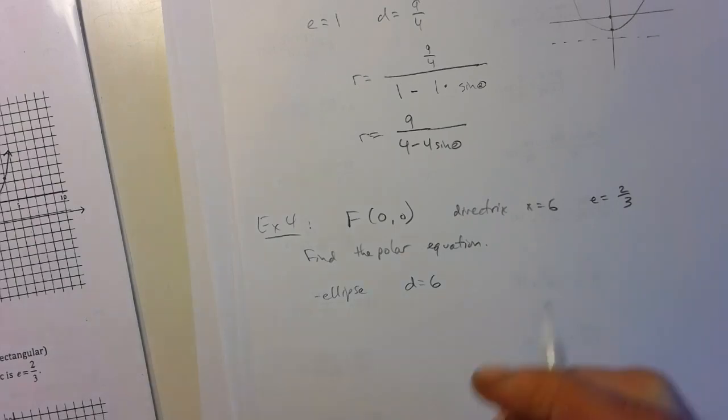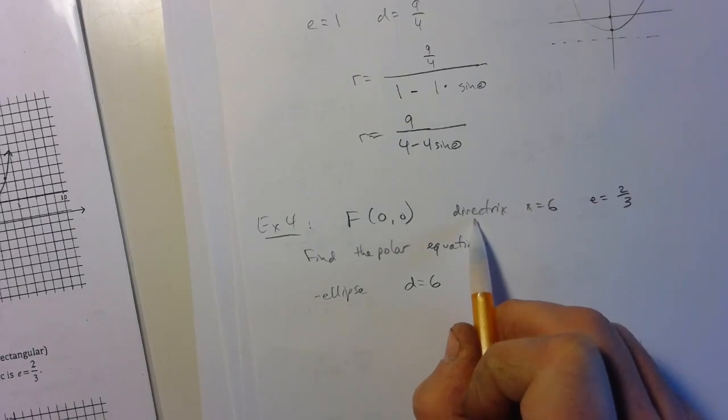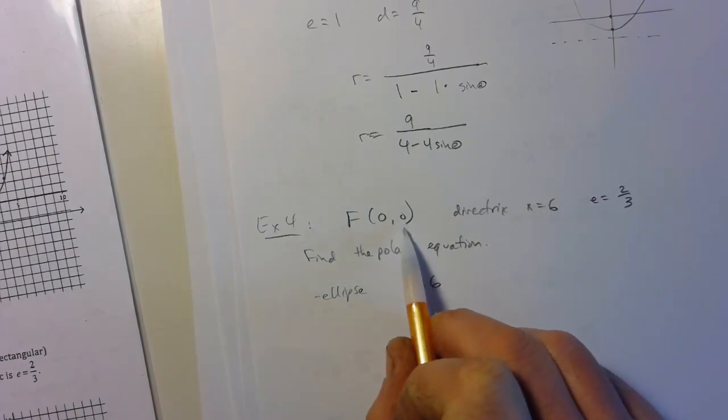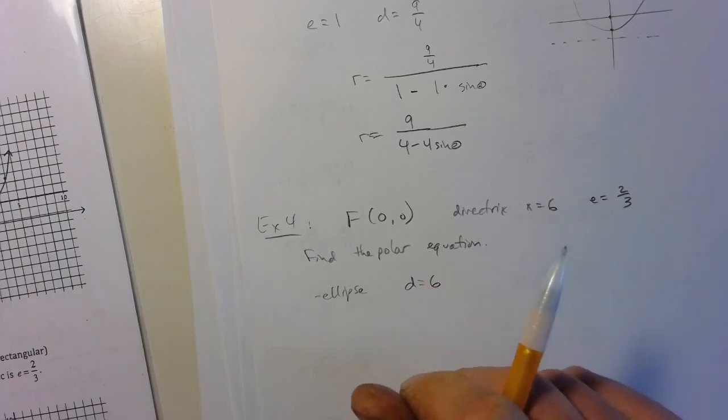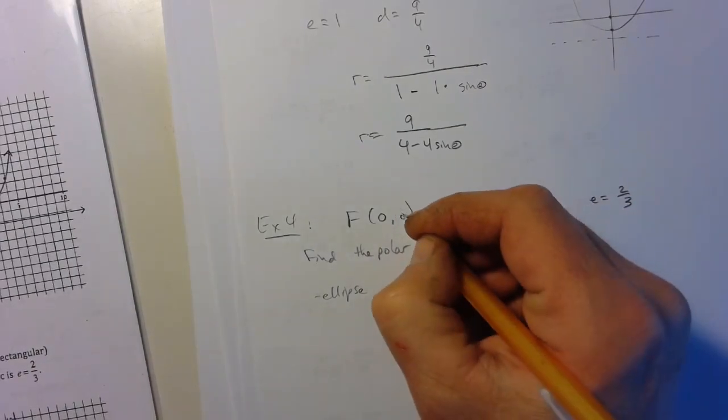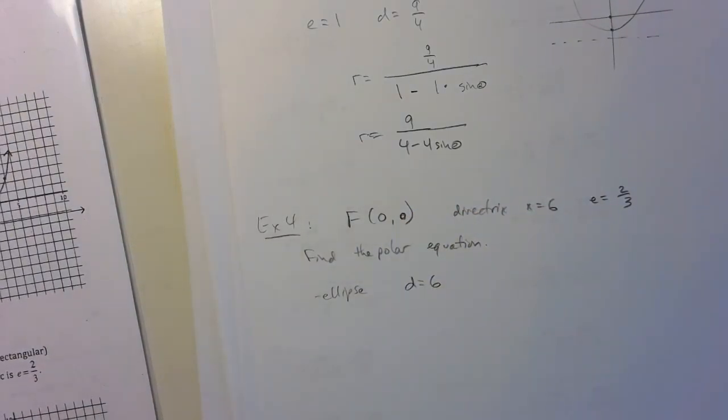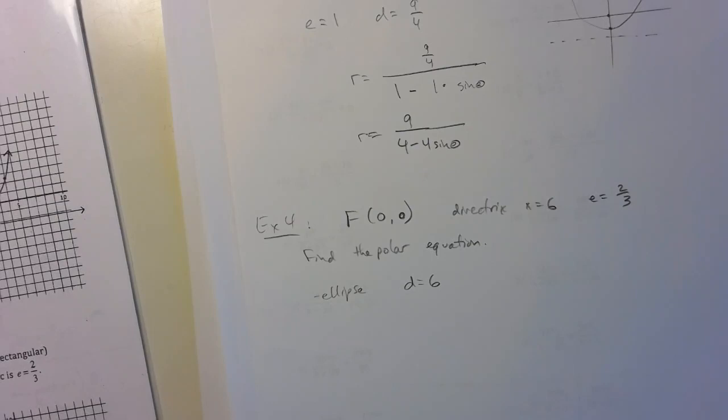One of the things that we were assuming here, and the problem these do a very good job of telling us, is that the directrix that goes along with this focus could be for the other focus. In theory, that would be a much harder problem. Probably not going to deal with that this year, no guarantees, but probably not. But we're going to make the assumption that that's for that focus. If it's not, then it's going to be a different equation.